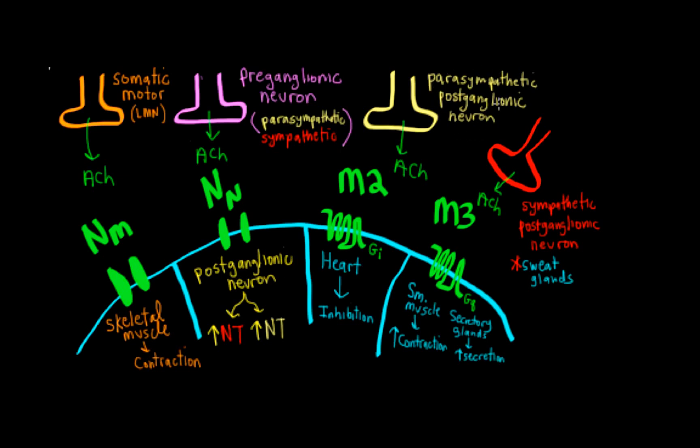Here we have the parasympathetic postganglionic neuron, which was activated by acetylcholine acting on nicotinic receptors on its soma. Now, the acetylcholine activates muscarinic 2 receptors when the parasympathetic neuroeffector junction is at the heart. Remember, the M2 receptor is coupled to a G protein. In this case, its main G protein is an inhibitory G protein that lowers cyclic AMP, and what that does in the heart is inhibit the SA node and AV node function. Overall we have inhibition of the heart, which is decreased heart rate and decreased AV node conduction velocity.